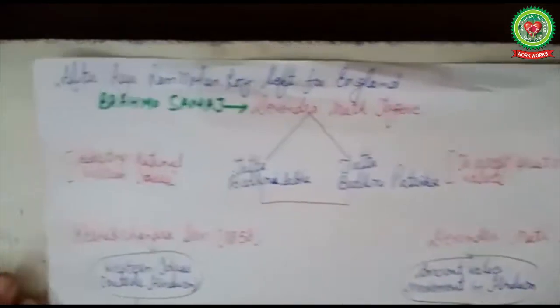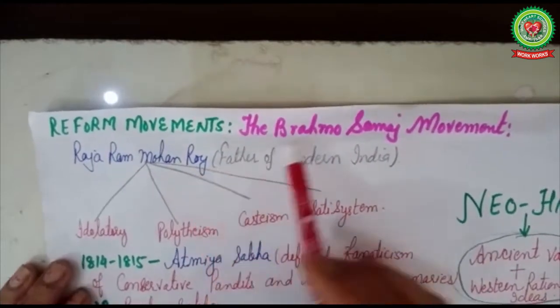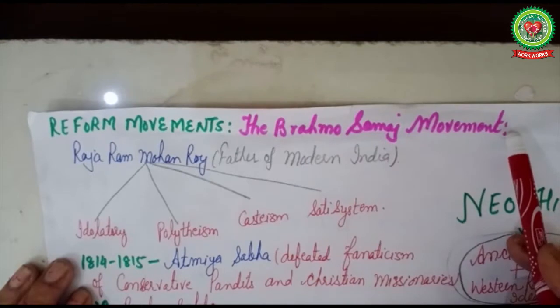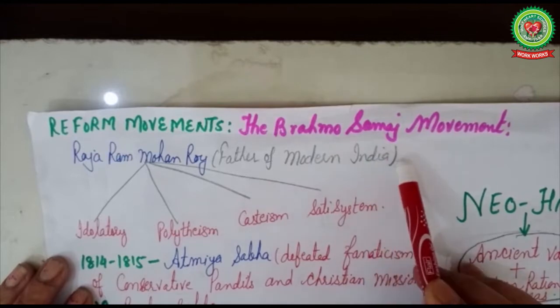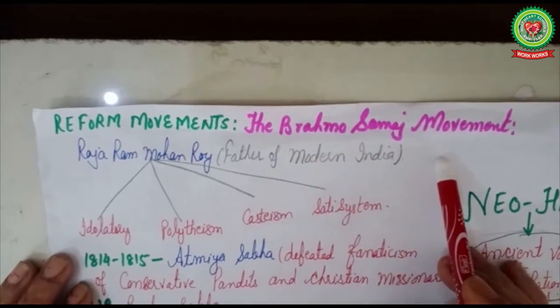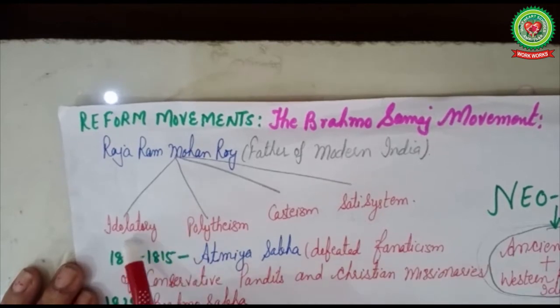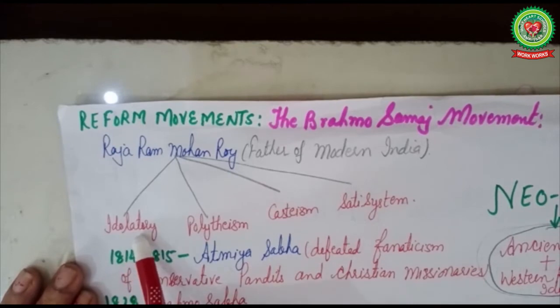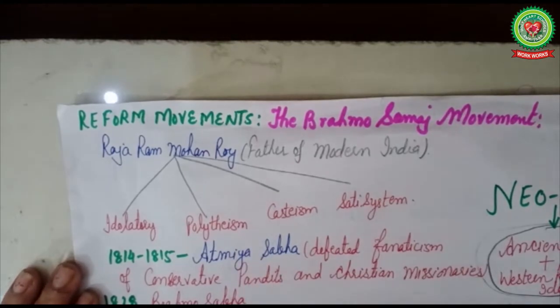Inspired by this western policy of utilitarianism, in India there was a reform movement led by Raja Ram Mohan Roy, called the Brahmo Samaj movement. Raja Ram Mohan Roy was famously called the Father of Modern India or the Father of Indian Renaissance, due to his introduction of new ideas and removal of superstitions from Hindu society. He was against idolatry — meaning the worship of images of gods and goddesses — and did not believe in polytheism.